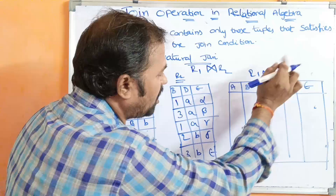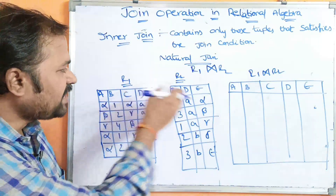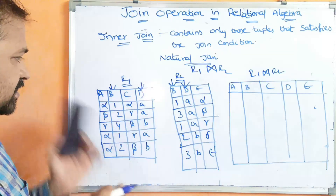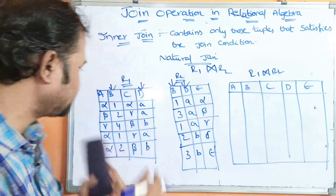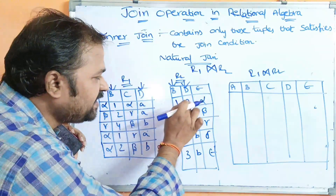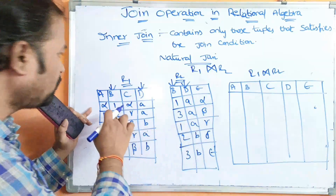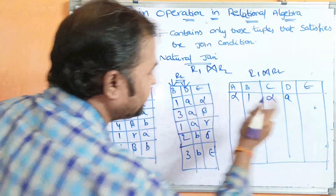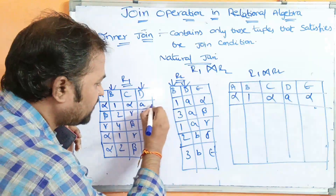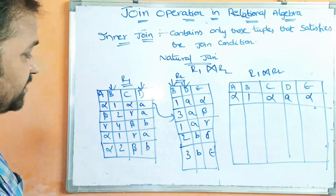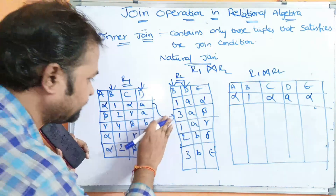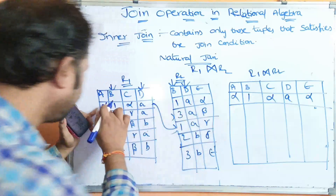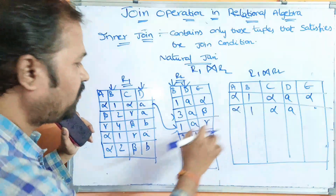Natural join will be performed on the two relations based upon the common attributes. R1 natural join R2. Here what are the common attributes in both the relations? BD is the common attribute in both relations. So it produces the output based upon those common attributes. BD means 1A here and 1A here — the values are matching. So it produces output: A, B, C, D as Alpha, 1, Alpha, A, and E is Alpha. Next, the first row is compared with the second row of the second relation: 1A versus 3A, not matched.